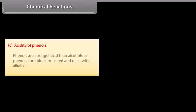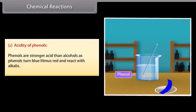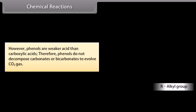Phenols are stronger acids than alcohols, as phenols turn blue litmus red and react with alkali. However, phenols are weaker acids than carboxylic acids. Therefore, phenols do not decompose carbonates or bicarbonates to evolve carbon dioxide gas.